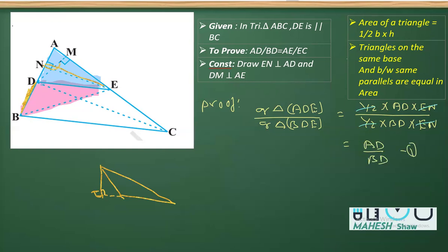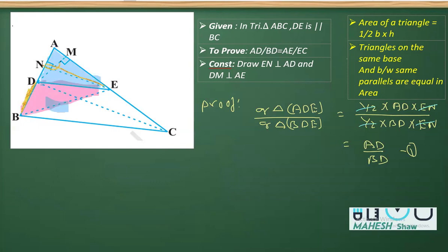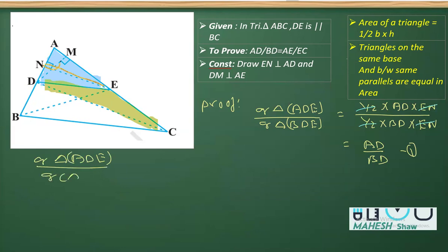That is equation 1. Next, we are going to consider two triangles again — the first being the same triangle ADE, and the second triangle this time is triangle DEC. We are going to obtain the ratio of these two triangles as equation 2: area of triangle ADE over area of triangle DEC.